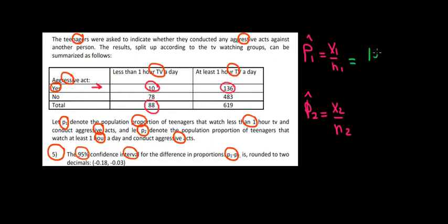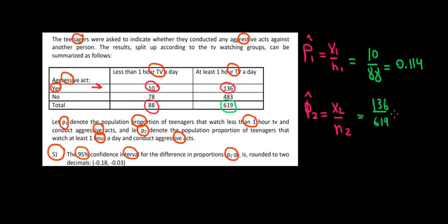So 10 out of 88 gives us our first proportion: p̂₁ = 10/88 = 0.114 rounded up. The same logic applies to the second group. Out of the sample of people who watch at least one hour of TV a day, we have 619 people, and out of them 136 commit aggressive acts. So 136 out of 619 gives p̂₂ = 0.22.